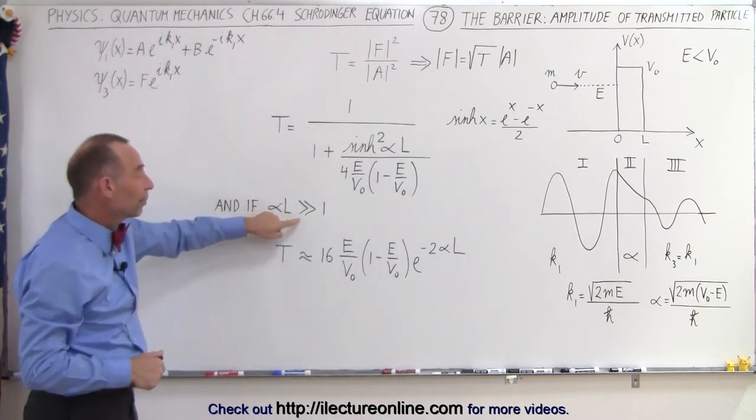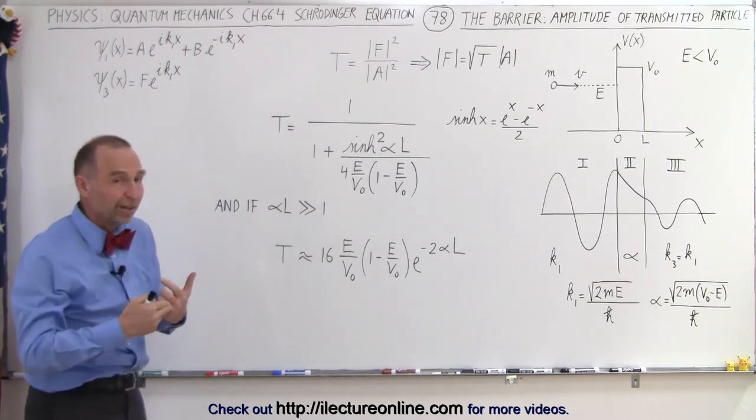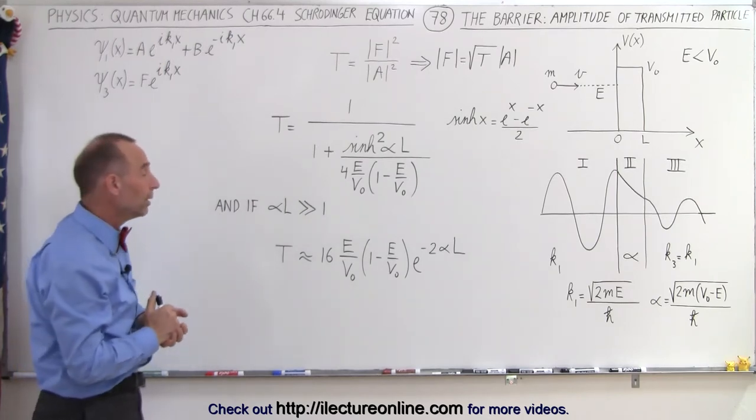Now, if alpha times L becomes large relative to 1, if that becomes much larger than 1, let's say 5 or 10 or something like that, which would be considered very large compared to 1.